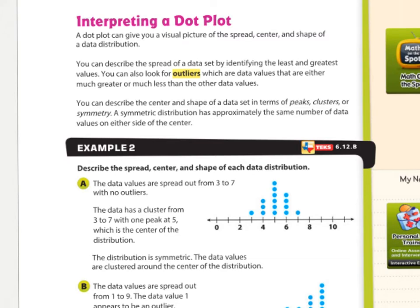A dot plot can give you a visual picture of the spread, center, and shape of a data distribution. You can describe the spread of a data set by identifying the least and greatest values. You can also look for outliers. Remember we talked about outliers when we were taking notes on mean, median, mode, and range. The outliers were like if you had nineties and eighties on your dashboards and hundreds, and then you made a zero. And we talked about how that zero really brings you down. The zero is a lot far, like a big distance away from the rest of the other numbers. So it was the outlier.